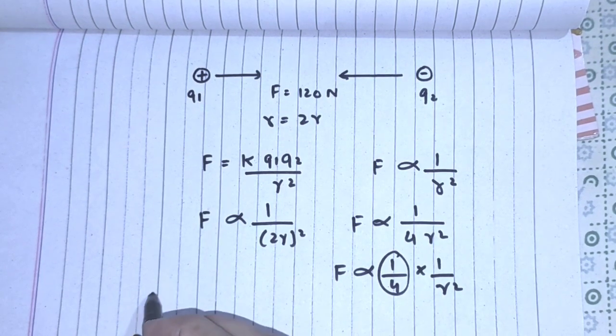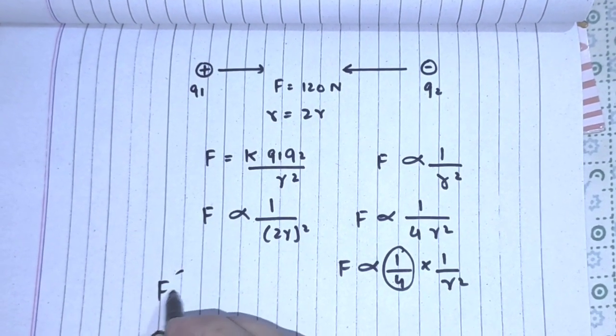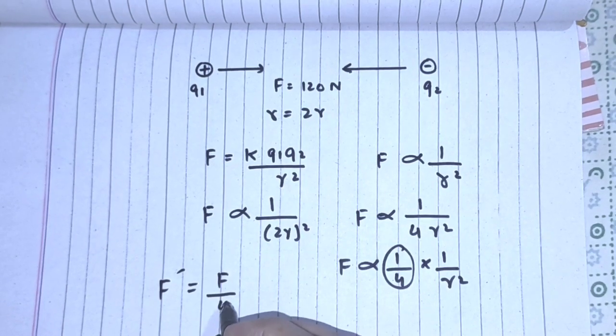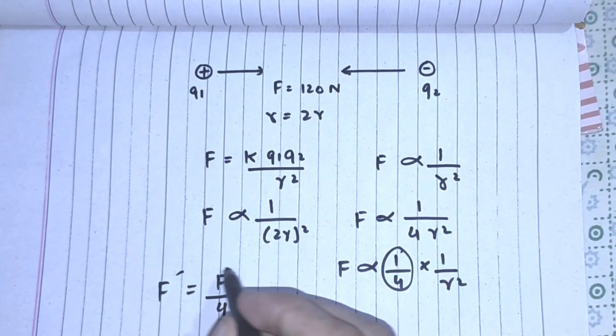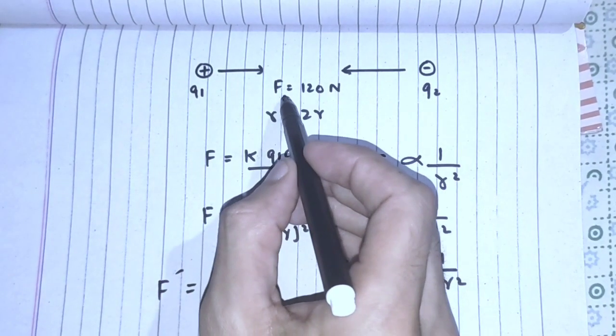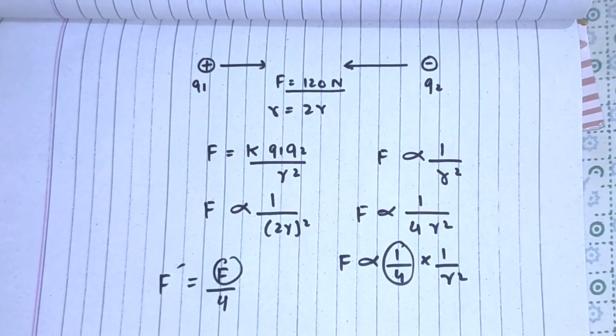So the new value of force equals F divided by 4. The initial force between the charges when the distance was not doubled was 120 Newton.